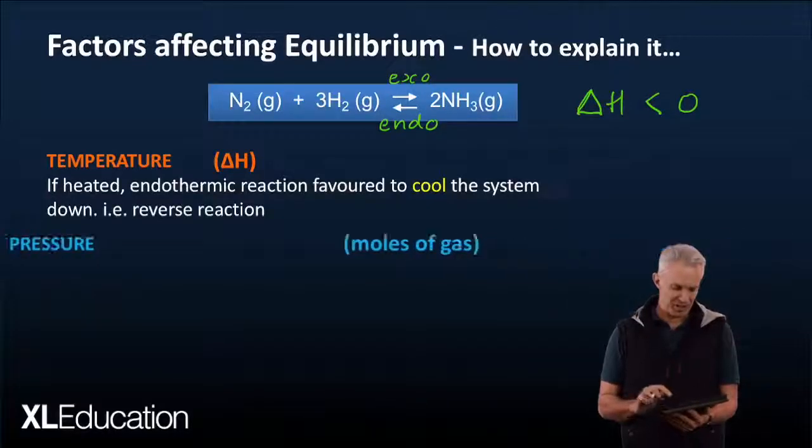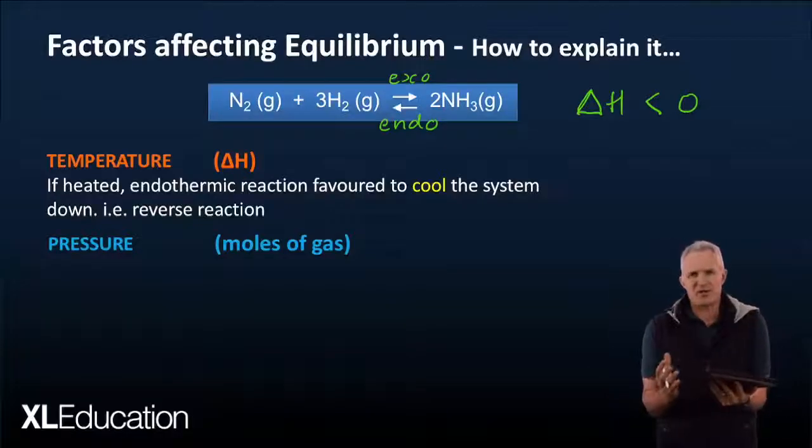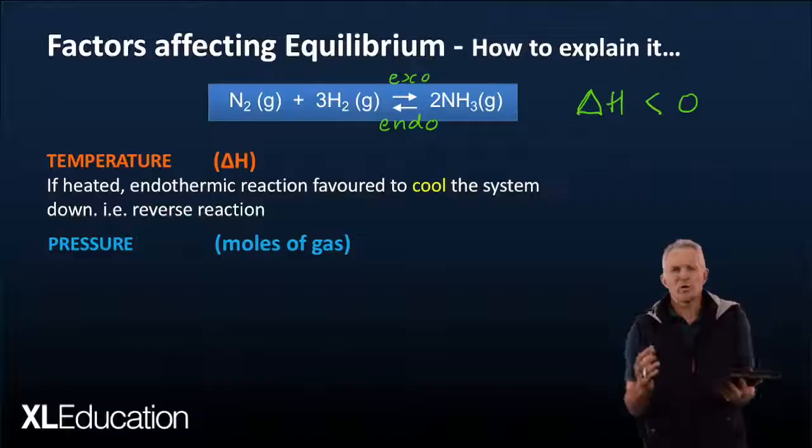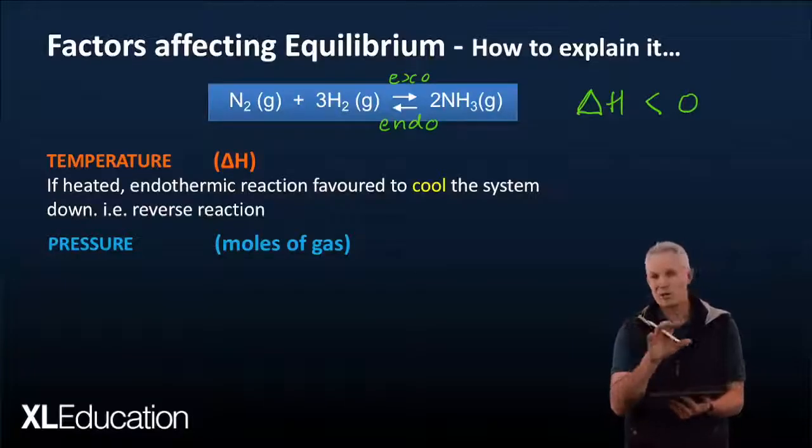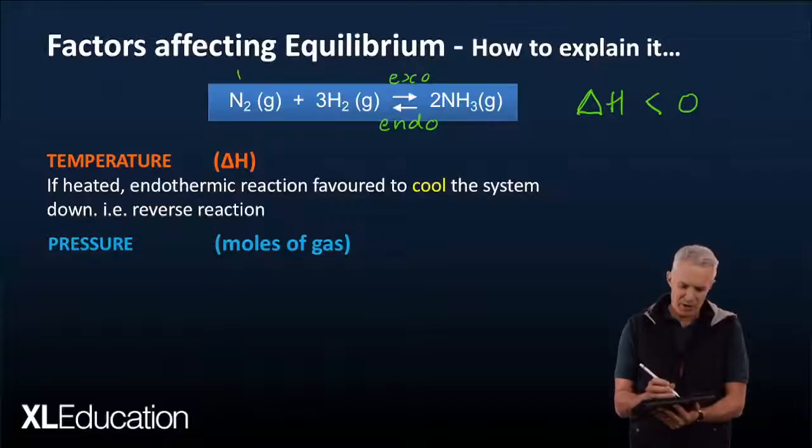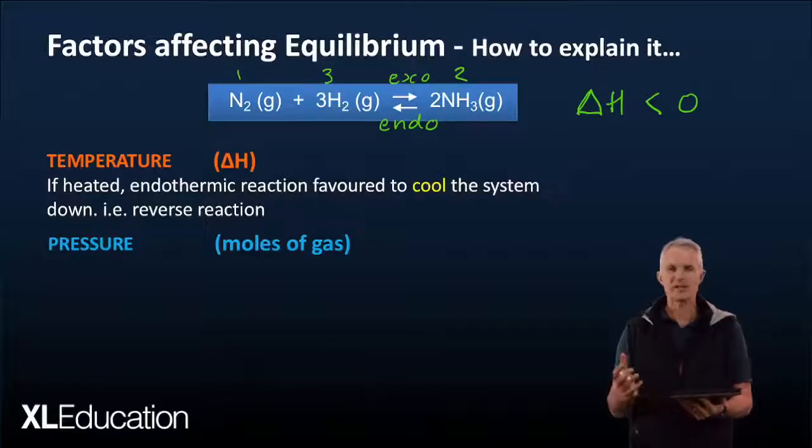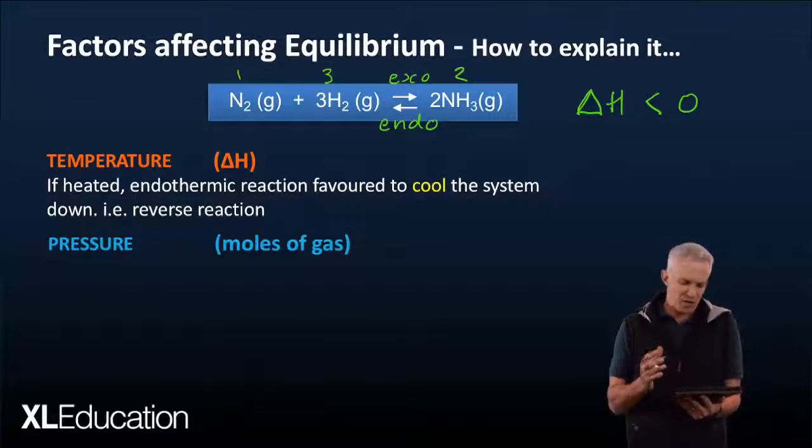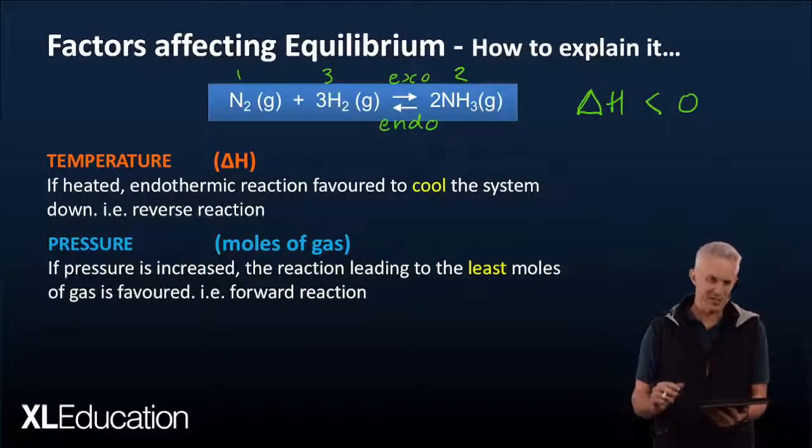Now what else could be changed? What about the pressure? Okay the pressure, well if you are squished into a taxi with a whole lot of other people you can't spread your arms out. You want to make yourself as small as possible. Similarly the reaction, if it's put under pressure, is going to want to make itself as small as possible. If you look on the left-hand side of the reaction we've got one mole of nitrogen and three moles of hydrogen. That's four moles of gas altogether. But on the right-hand side we've only got two moles of ammonia. So therefore that's a lot more compact. So if we put this under pressure it's going to favour the forward reaction because there are fewer moles of gas on the right-hand side. If the pressure is increased leads to the least moles.